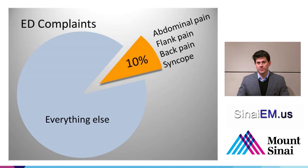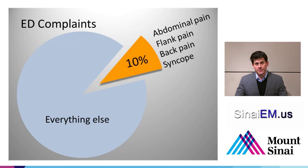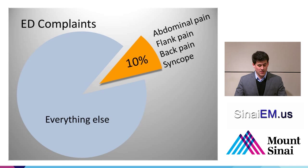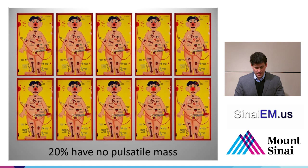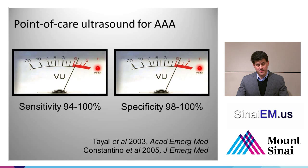Common complaints where you should consider abdominal aneurysm include abdominal pain, flank pain, back pain, and syncope. I'm not suggesting every patient with syncope should have an ultrasound evaluation, but it's worth considering when there's no other cause. A common physical exam finding is a pulsatile abdominal mass; however, 20% of patients with abdominal aortic aneurysm don't have one. Physical examination isn't terribly sensitive or specific, whereas point-of-care ultrasound can be very sensitive and specific.